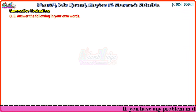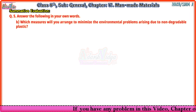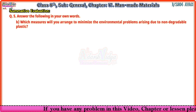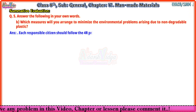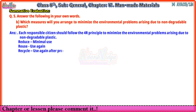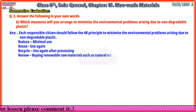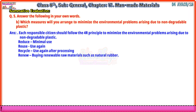Second question under Question 5: Which measures will you arrange to minimize the environmental problems arising due to non-degradable plastic? Each responsible citizen should follow the 4R principle: Reduce — minimal use; Reuse — use again; Recycle — use again after processing; Renew — buying renewable raw materials such as natural rubber.